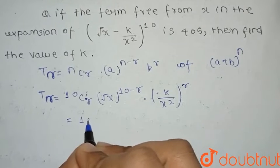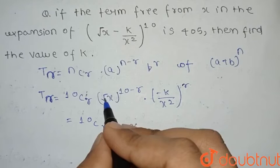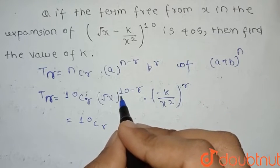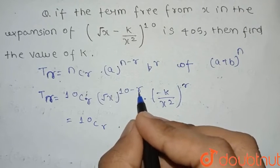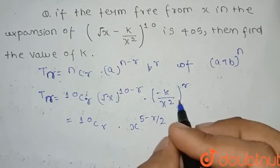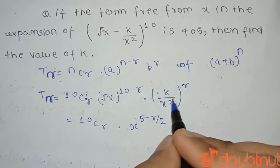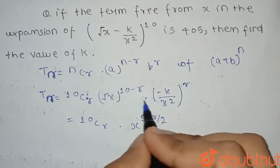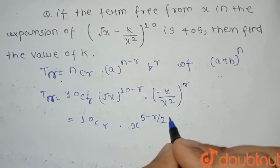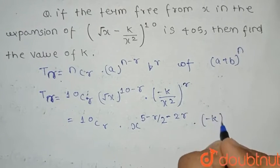Let's arrange this. It will become ¹⁰Cᵣ · x to the power, this is root so in power it will become 1/2, so it will become 10/2 - r/2, that is 5 - r/2. And from here, this will become x to the power -2r. If we subtract this power of x, it will become (5 - r/2 - 2r) · (-k)ʳ.